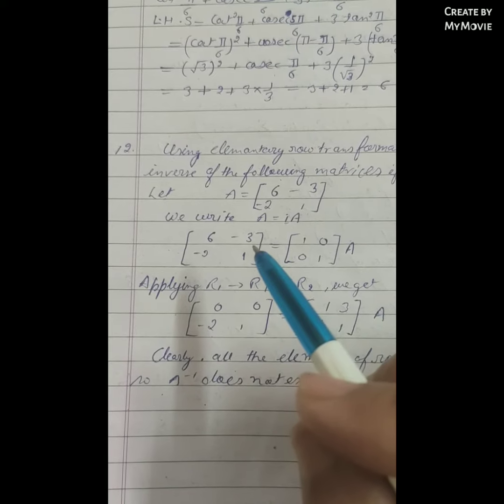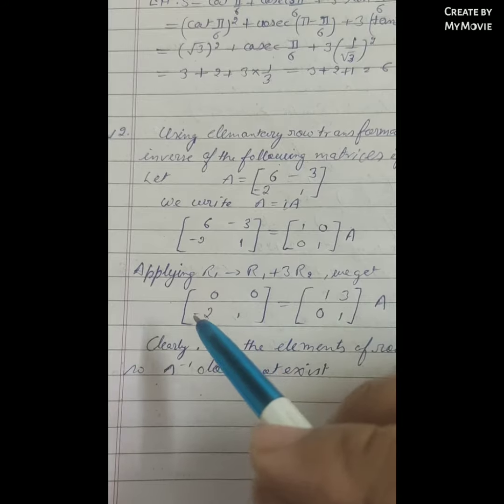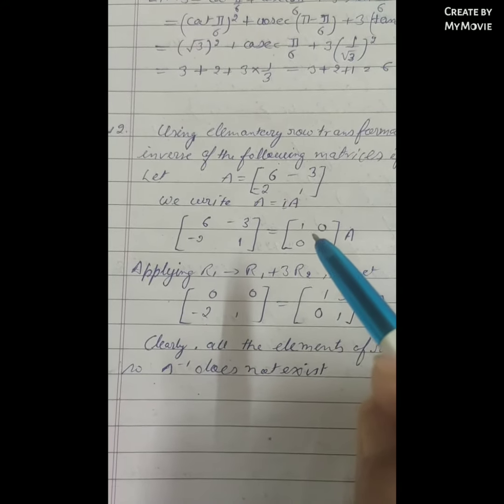The second row stays as is: [-2, 1]. Similarly, on the right-hand side, we have [1, 3] and [0, 1].